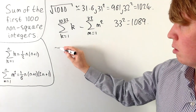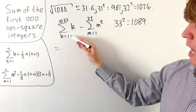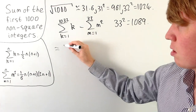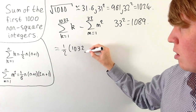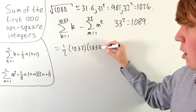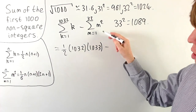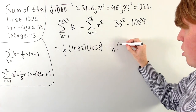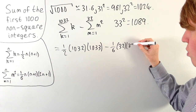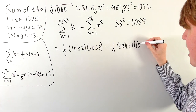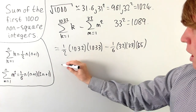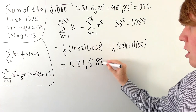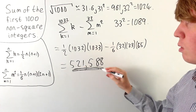Now we use each formula. The sum from k = 1 up to 1,032 of all integers is (1/2) × 1,032 × 1,033. Then we subtract the sum of the first 32 squares, which is (1/6) × 32 × 33 × 65. When we calculate all of this, we get 521,588 as our solution.